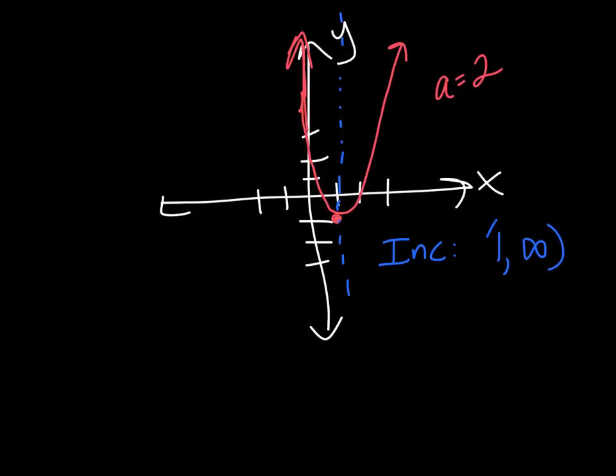I'm putting the soft brackets on both because at 1 the graph is really kind of hitting a little horizontal. It's not increasing or decreasing, so that's why I didn't use the hard bracket.